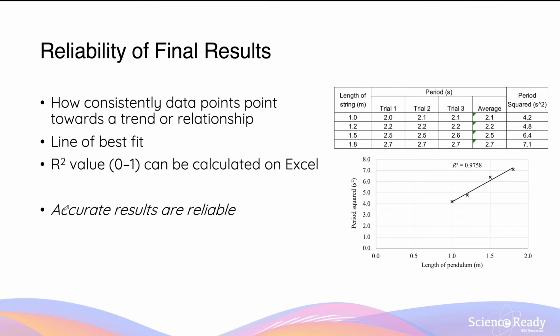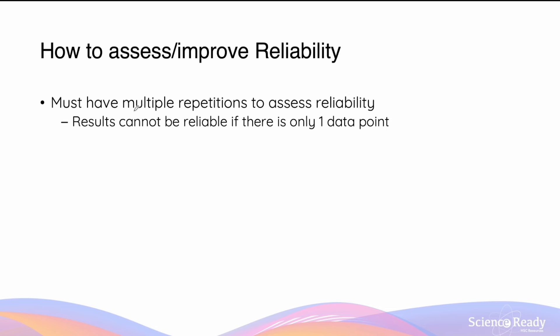When speaking about reliability and how results fit the general trend, I want to emphasize that where you have accurate results — meaning experimental data are close to the theoretical or accepted data — this generally implies the results are also reliable. However, the converse is not true: reliable results are not necessarily always accurate. I'll speak more about this shortly.